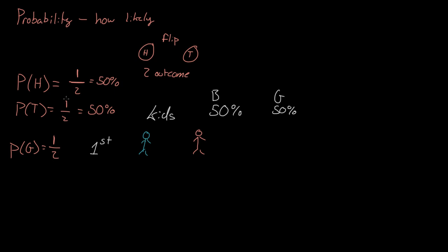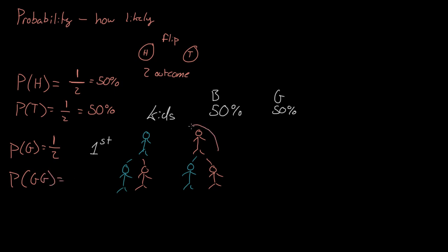Now let's say you have another child. If you had a boy first, you have a probability of having another boy or a girl. And the same would be true starting with a girl. So what's the probability of having a girl and then another girl? That's one outcome out of a total of four outcomes: girl-girl, girl-boy, boy-boy, and boy-girl. So the probability of having a girl and then a girl is one out of four.